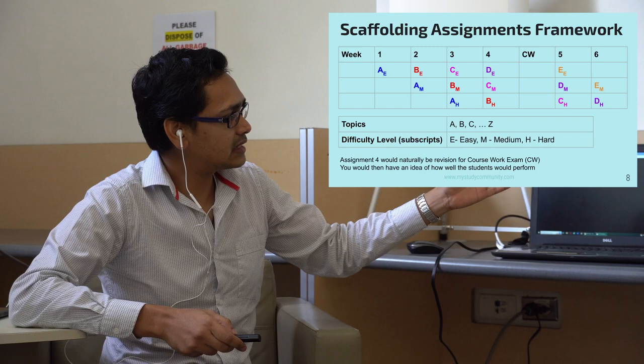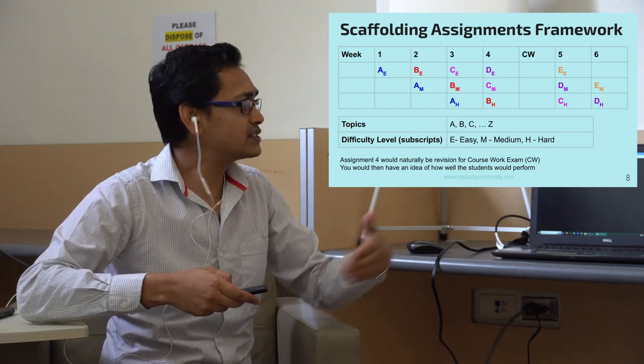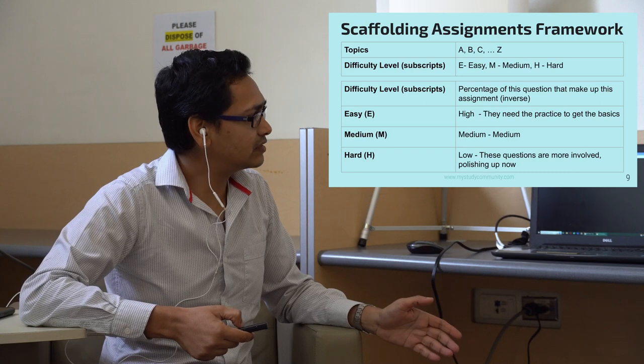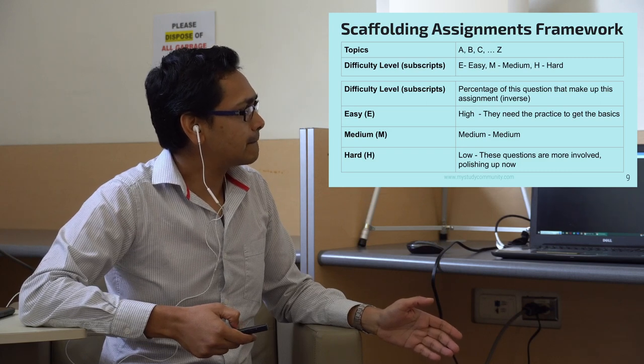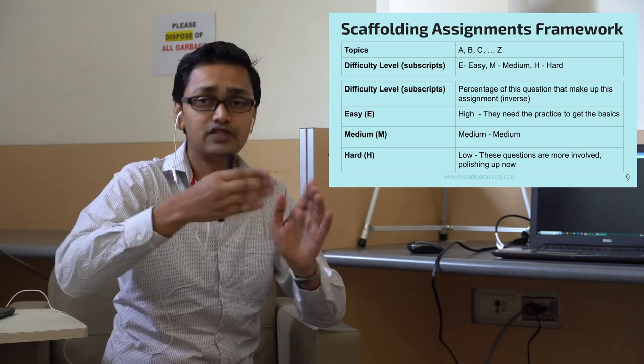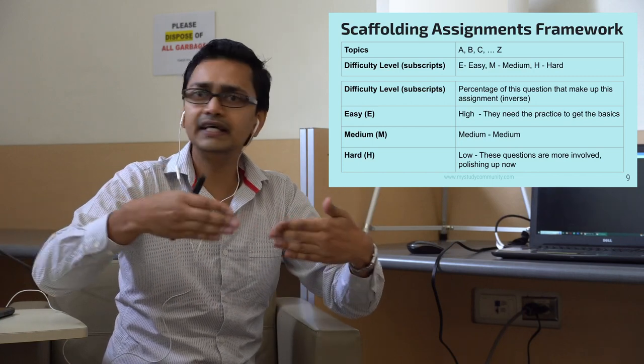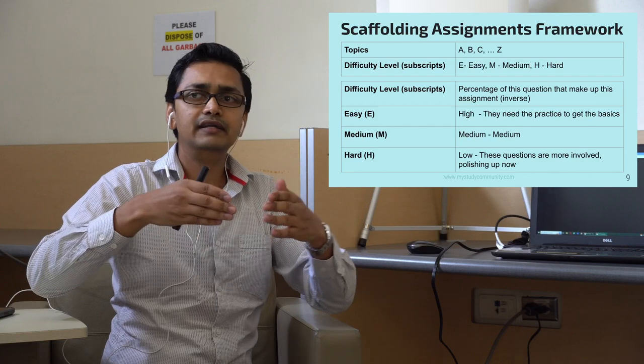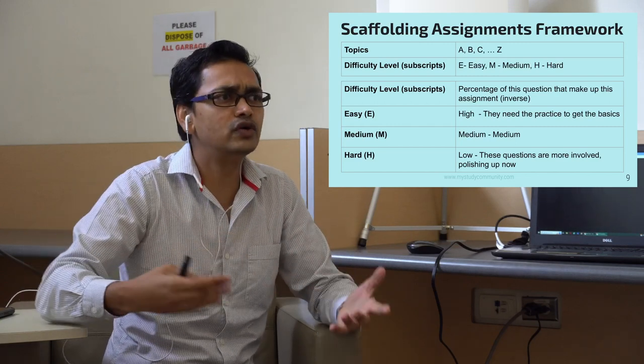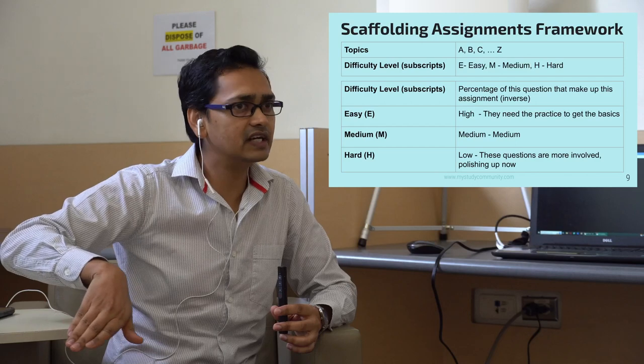So by week four, let's say assignment four, naturally assignment four kind of serves as a revision as well, right? Because you would have done more or less all the topics. Then we have difficulty level. So the percentage of content in the assignment. Now when you now introduce a topic, the easy ones, you have plenty questions because they want to get the basics. Then when you go to medium now, then you have less questions. And when you go difficult, you probably have one question because they should know what's going on by that time. So the percentage of the content decreases. So it's inversely proportionate to difficulty level.